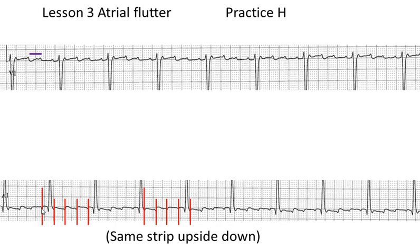In this case, I started measuring with the flutter wave that began before the QRS — starting here. From here to here is one flutter wave, second flutter wave, third flutter wave, fourth flutter wave, and now I'm back at the beginning of the QRS. Over here, I started behind the QRS at a nice little dip: one flutter, two, three, four.